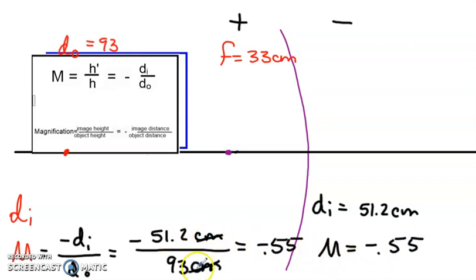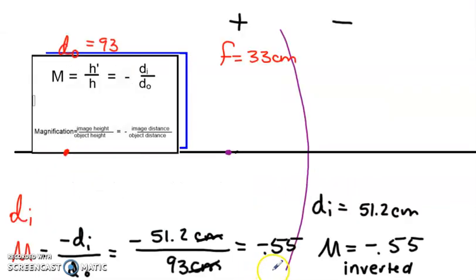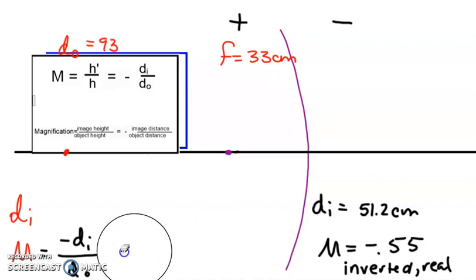There is no unit on here because centimeters cancel out. This negative right here is telling you that you are going to have an inverted picture or an upside down picture. And it also tells you that it will be a real image too because inverted is always real. It's a negative M value that we got there. This is inverted and real.